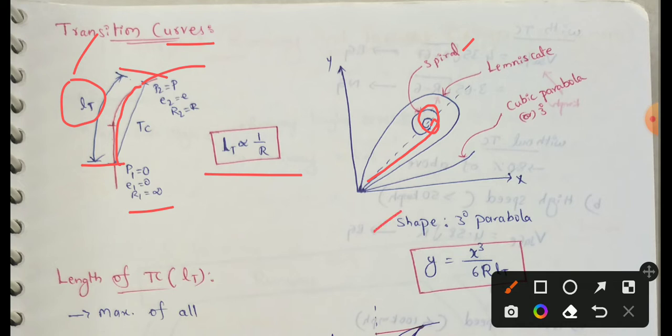This curve is 3D parabola, the third degree parabola. y equals x cube by 6 R into LT. LT means length of transition curve.